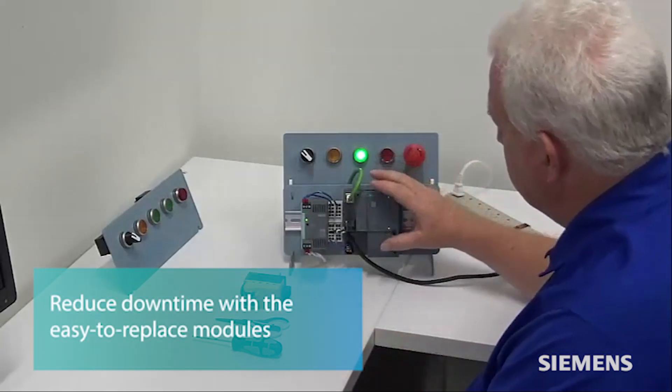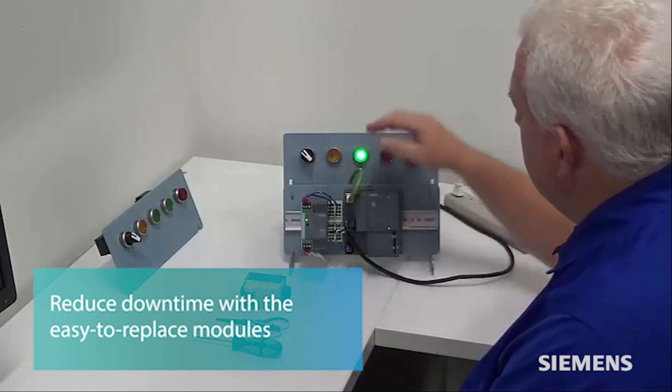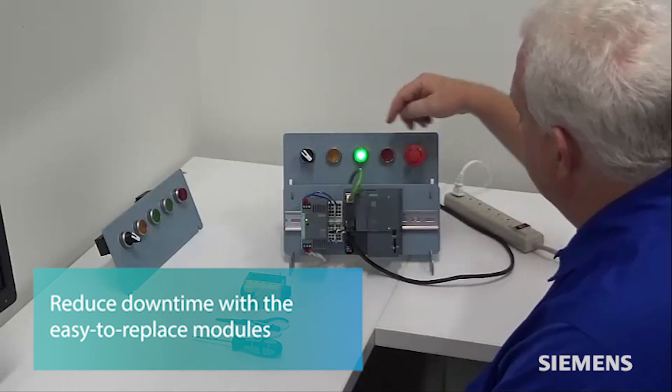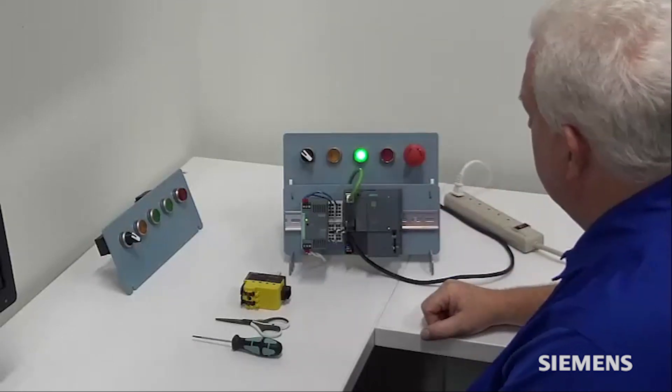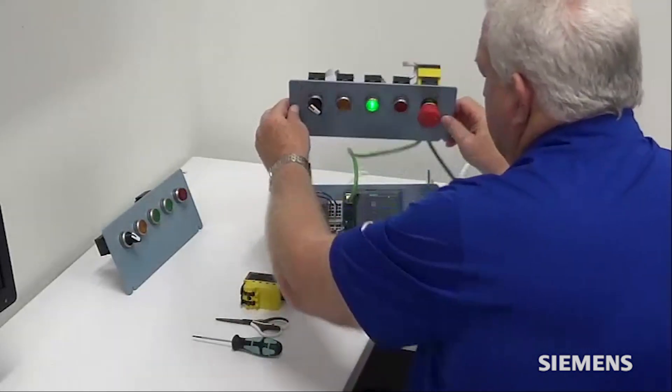So what we have here today is a safe PLC communicating to our Sirius Act system. We have an E-Stop and a few terminal modules running to the back, and as you can see on the back of this module.